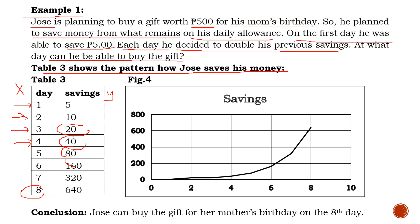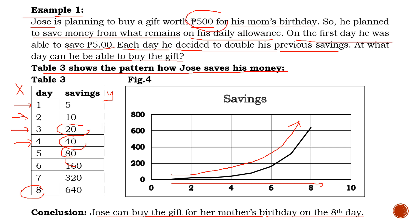If we use a Cartesian plane, we can visualize the behavior of the graph representing the number of days and savings of Jose. The graph's behavior shows that if your X increases, it's automatic that your Y also increases — it represents an exponential growth or an increasing function. Jose can buy the gift for his mother's birthday on the eighth day. Because our goal is to save 500 pesos, we cannot meet that on the seventh day since it's only 320. We can meet your 500 pesos on the eighth day. The answer is on the eighth day of his savings period.